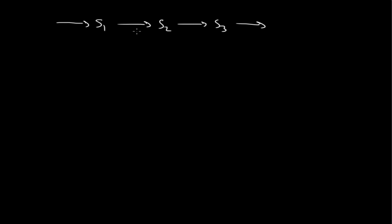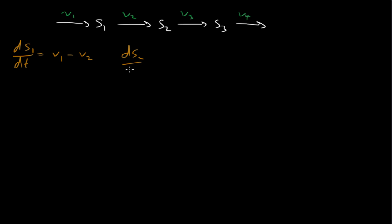I've labeled the species S1, S2, and S3. And let me label the reactions V1, V2, V3, and V4. Now I can write down the differential equations for this system quite easily. The rate of change of S1 is what's coming in minus what's going out. Assuming unit stoichiometries on all the reactions, DS2 equals V2 minus V3, and DS3 equals V3 coming in minus V4 leaving.